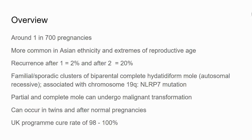These conditions are uncommon, affecting around 1 in 700 pregnancies. They're more common in women from Asian ethnic backgrounds and those that are very young or over 40. Recurrence is increased after experiencing one molar pregnancy at 2%, and after two molar pregnancies up to 20%. There are also familial sporadic clusters associated with a chromosome 19q mutation.